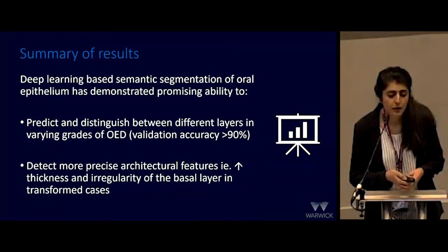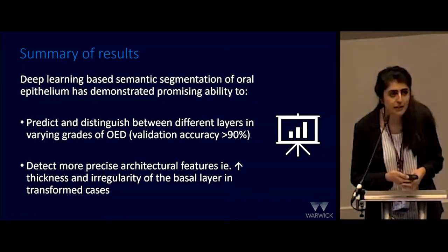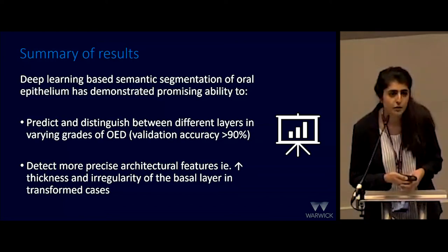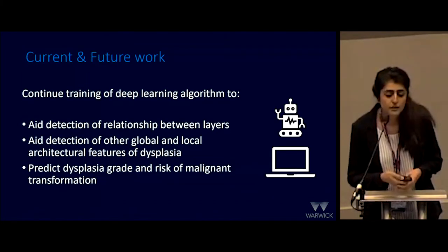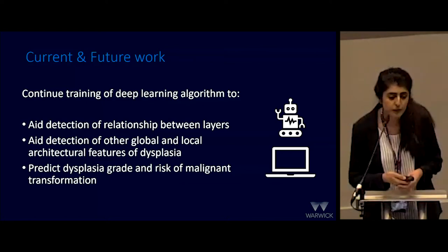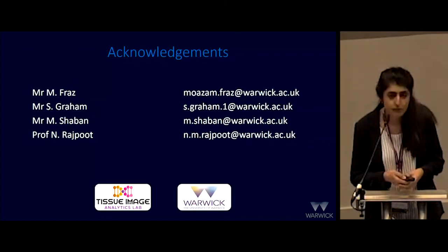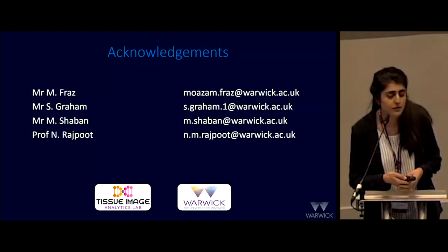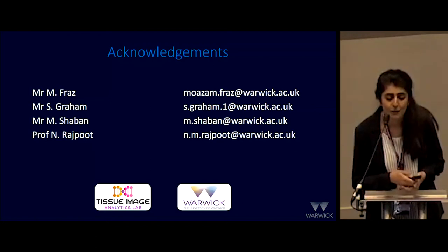To summarise, our deep learning-based automated segmentation has demonstrated a promising ability to predict and distinguish between the different oral epithelial layers in the different grades of dysplasia, and also an early ability to detect more precise architectural changes. Currently, we're in the process of expanding our cohort to further train the AI algorithm, and we hope through this we'll be able to aid detection of the relationship between the different layers and identify other local architectural features to assign a global dysplasia grade to each case. I'd like to acknowledge Professor Rajput and members of his team who've helped with the technical side of this project.